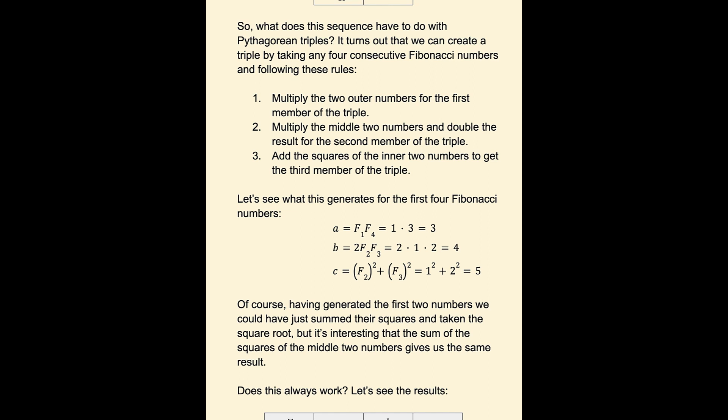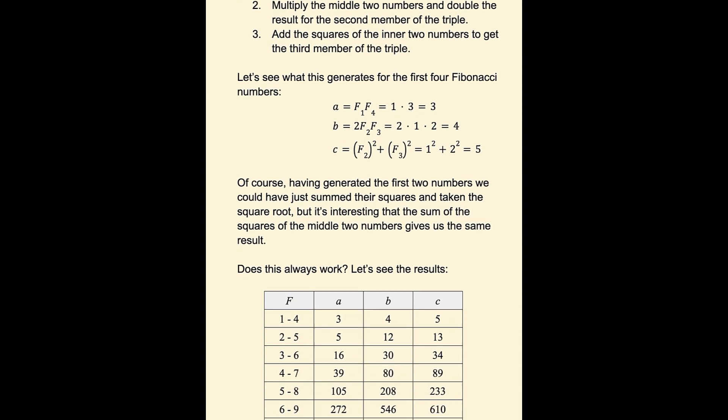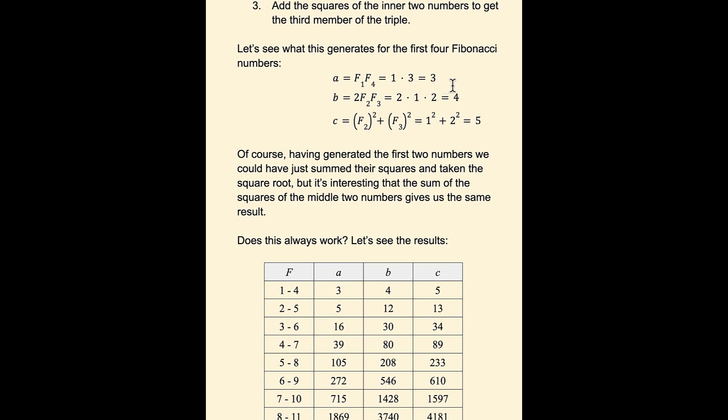Of course, once we have the first 2 numbers, we could have just summed their squares and taken the square root of that. But it's interesting that the sum of the squares of the middle 2 numbers gives us the same result. Does this always work? We saw it just worked for the first 4.